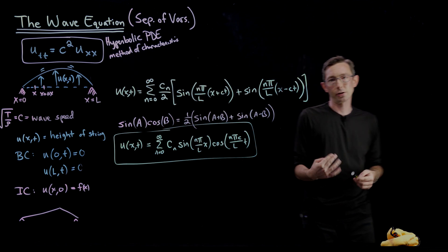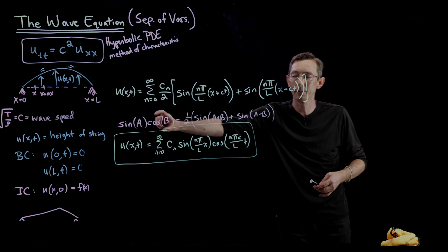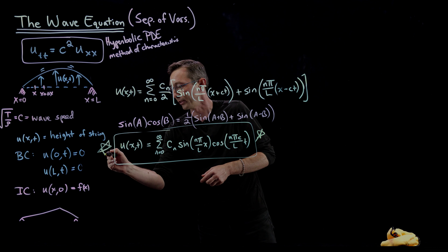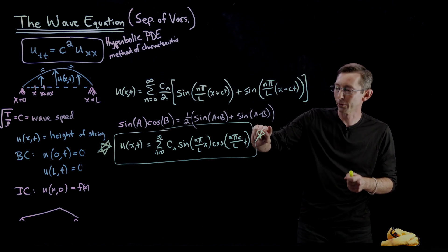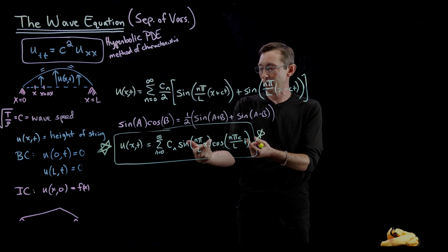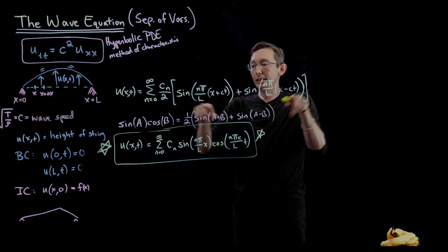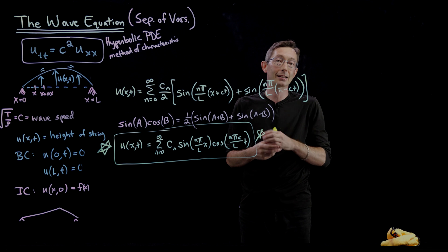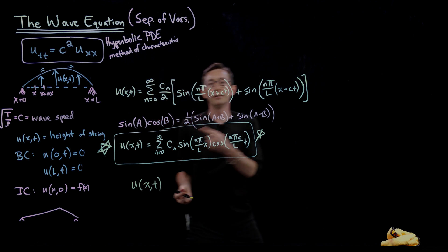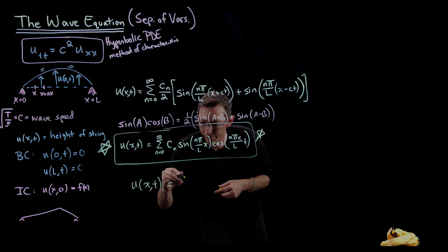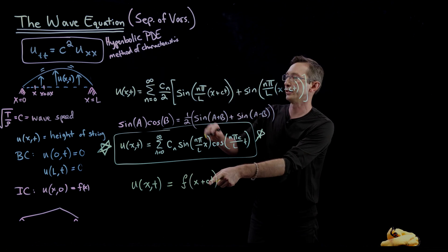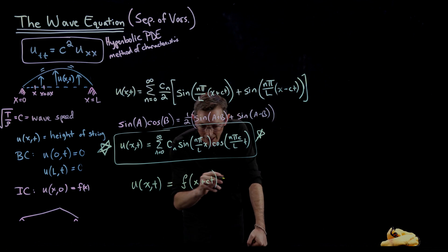At the very end of the second lecture, I showed you that using this trigonometric identity here in pink, you can transform this solution into a very interesting form, where we've combined our spatial sines and our temporal cosines into sines of x+ct and x-ct. So in general, you can say that u(x,t) equals some function f of x plus ct, and that is going to be a solution of this PDE.